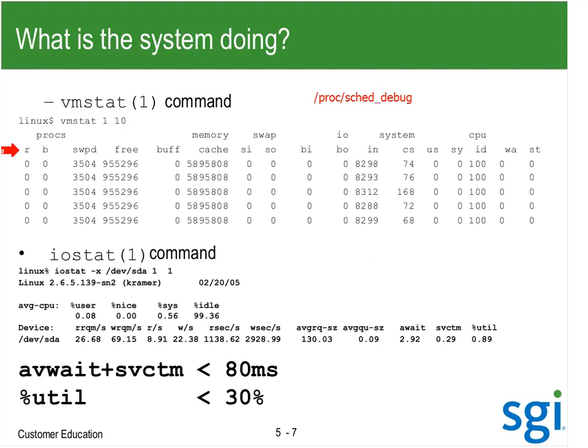B stands for blocked — a process that has gone to sleep on a WCHAN event. So B is for things that are in a D state. Then we've got information about swap, how much memory is free, my raw IO, my cached IO. That may include slab, dirty, write-back, NFS, SHMEM, and tmpFS — all those things are in the cache field.